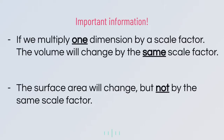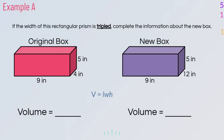In example A, it says if the width of this rectangular prism is tripled, complete the information about the new box. We can see that the width has gone from four inches to 12 — four times three is 12. The volume of the first prism is nine times four times five, because volume is length times width times height, which gives us 180 cubic inches.